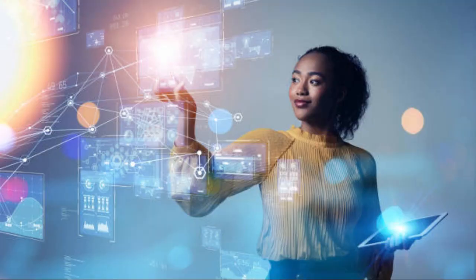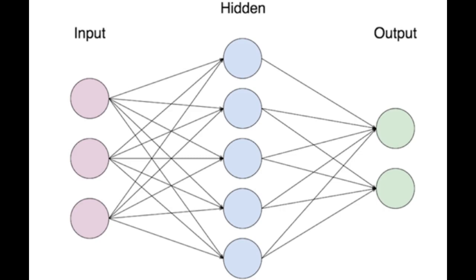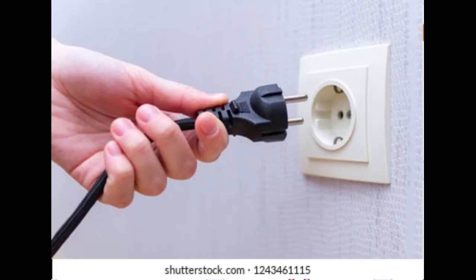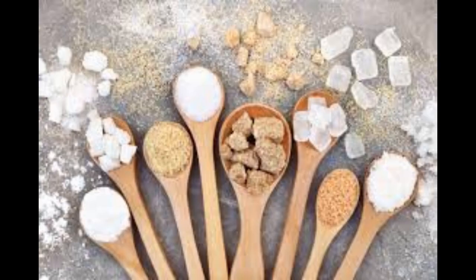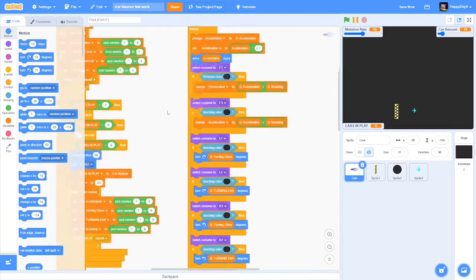To make this controllable by an evolving system, we need an input, a middle section, and an output. Your inputs will usually range from touching things to raycasts.